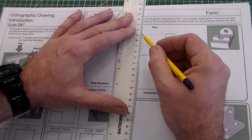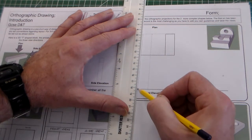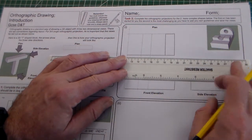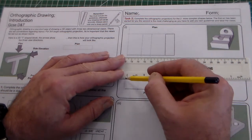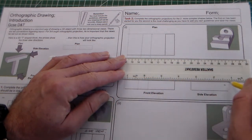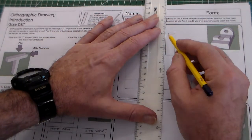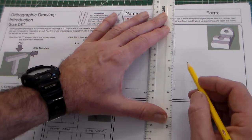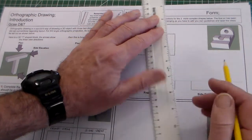All the time using construction lines that should be light. I'm then going to add this detail to the front elevation which I'm going to project across. So this is the top part of the front elevation and I'm going to project that across to the side elevation. Then I'm going to project this line down here and this line down here.